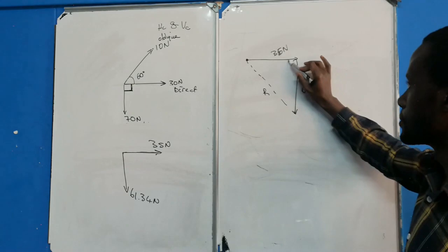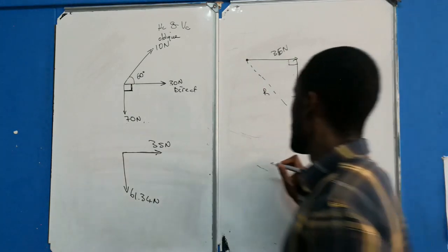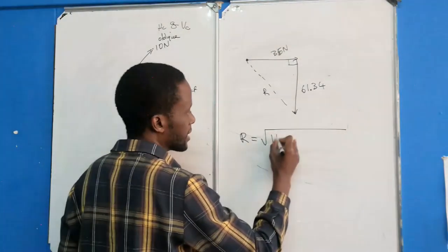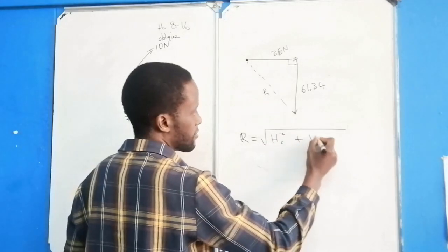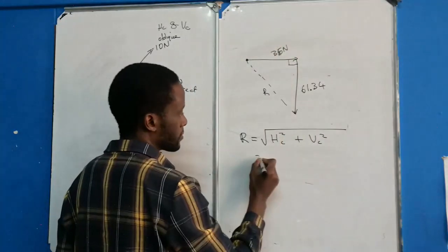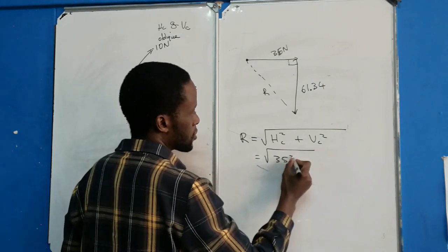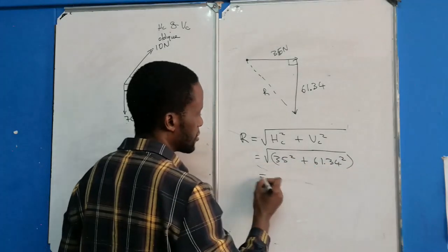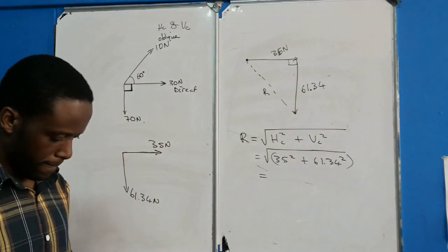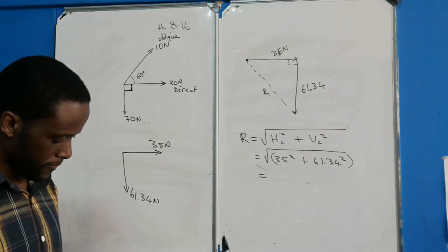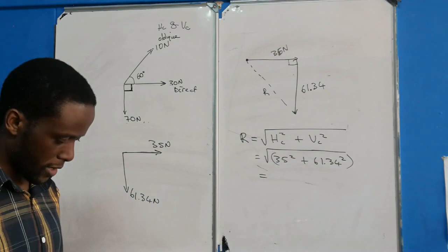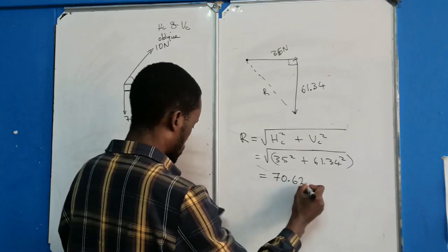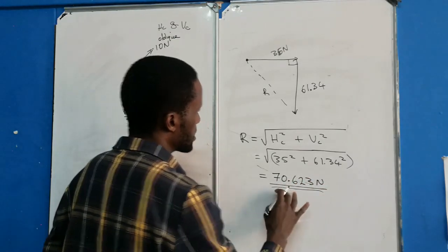Since it forms a right-angle triangle, the resultant magnitude is calculated using the Pythagorean theorem: the square root of the sum of horizontal squared plus vertical squared. That is the square root of 35² plus 61.34², which gives us a resultant of 70.623 newtons.